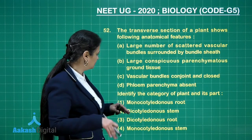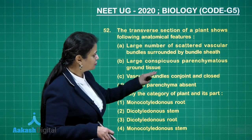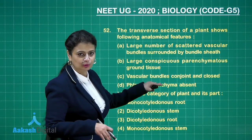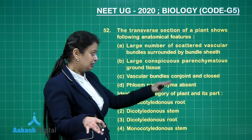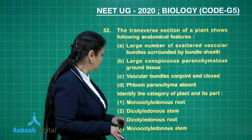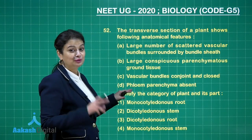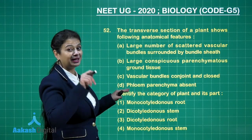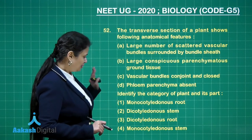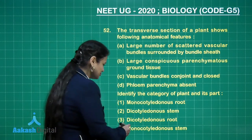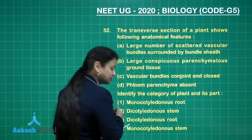The vascular bundles are conjoint and closed — in monocots there is no cambium associated with the vascular bundle, and importantly, there is no phloem parenchyma either. All these features are associated with monocot stem, so monocot stem is the answer.